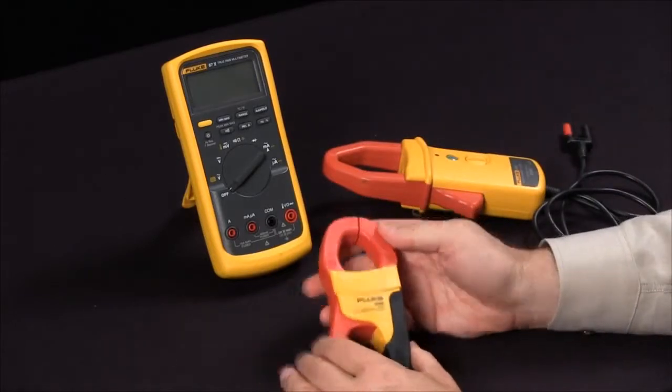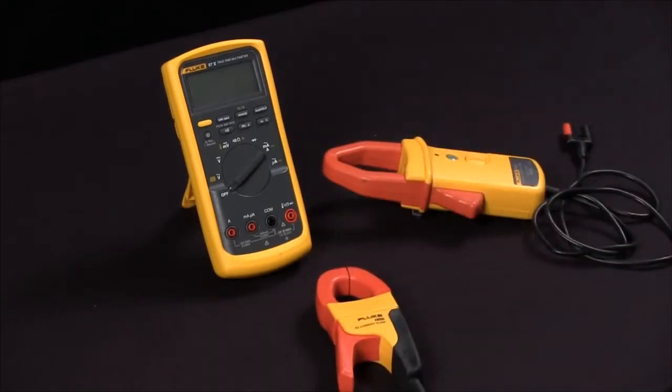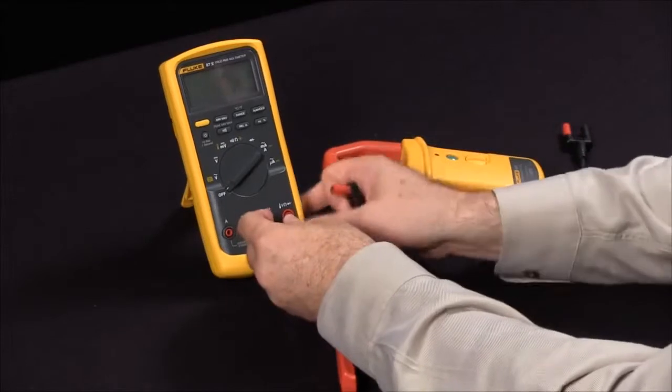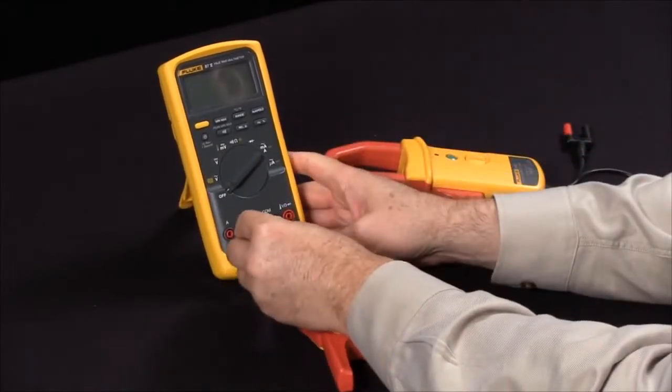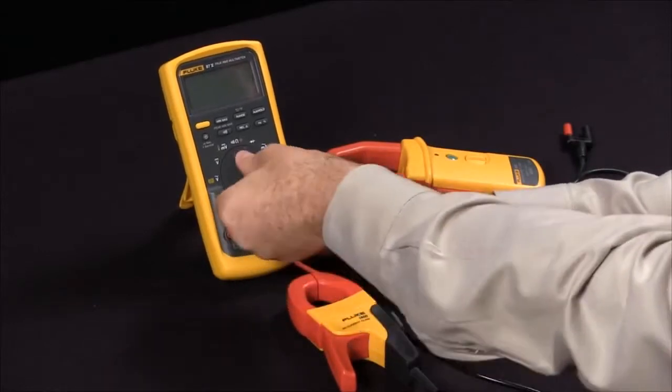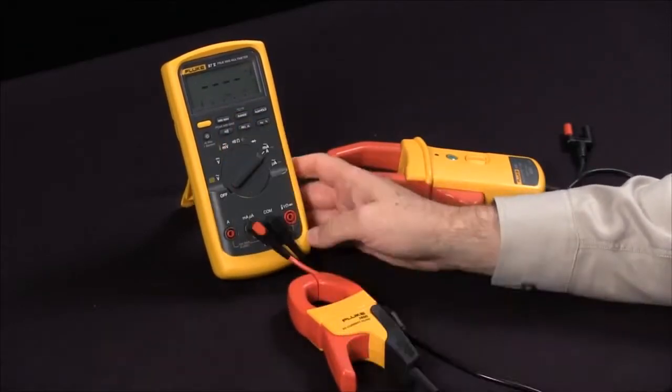To measure AC current, simply insert your test leads into the jacks. In this case, you would go into your common as well as your milliamp jacks, then set your meter to measure on milliamps.